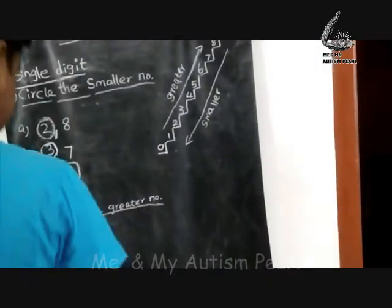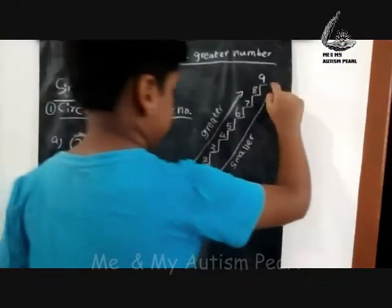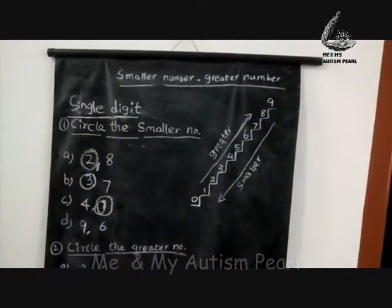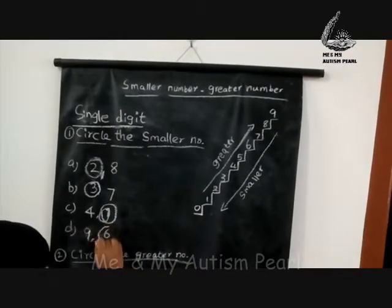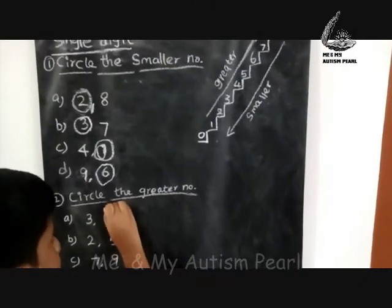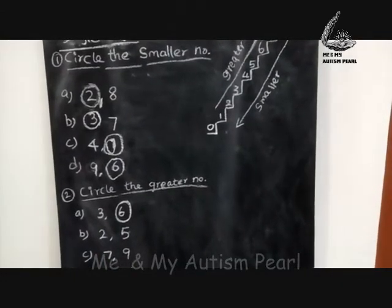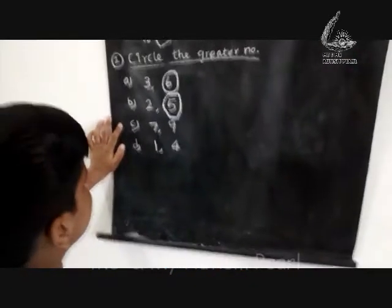9 and 6. 9 is up and 6 is down. So 6 is the smaller number. Ok, can you circle the greater number please? The greater number is 6 because 6 is up.